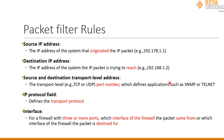Port numbers define applications such as SNMP (Simple Network Management Protocol) or Telnet (remote login), and are examined to determine whether packets should be discarded or forwarded. The IP protocol field is checked to find out what kind of transport protocol is used — TCP or UDP. The interfaces rule applies to firewalls with three or more ports, examining which interface the packet is coming from or destined to.